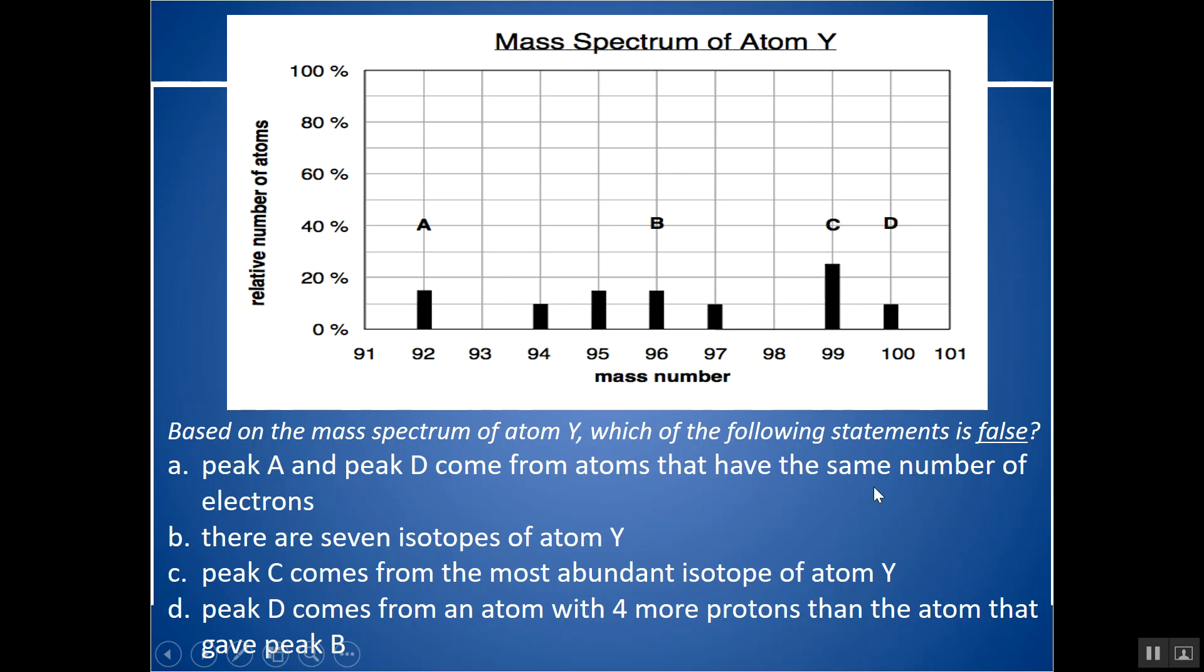Peaks A and D come from atoms that have the same number of electrons. That would be true if it's the same element, if it's all atom Y. There are 7 isotopes. Let's see how many peaks. There's 1, 2, 3, 4, 5, 6, 7. So that would be true. Each peak would be looking at the isotopes that are there. Peak C comes from the most abundant. That's the highest. So I would say that's most abundant. That's true.